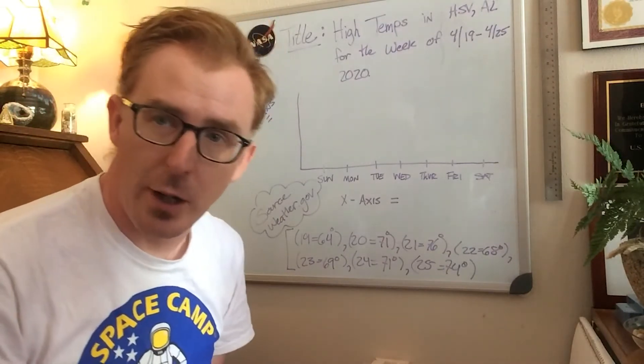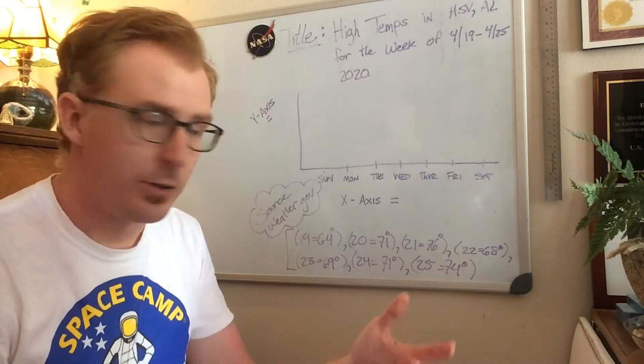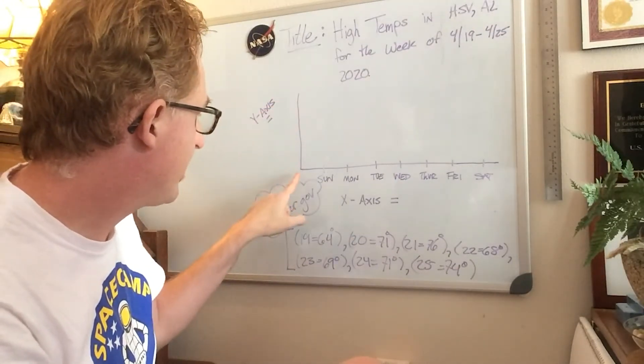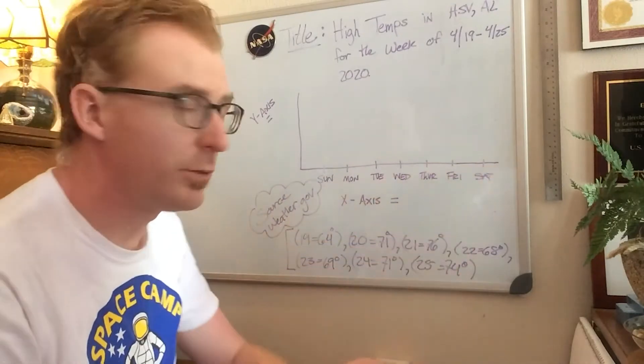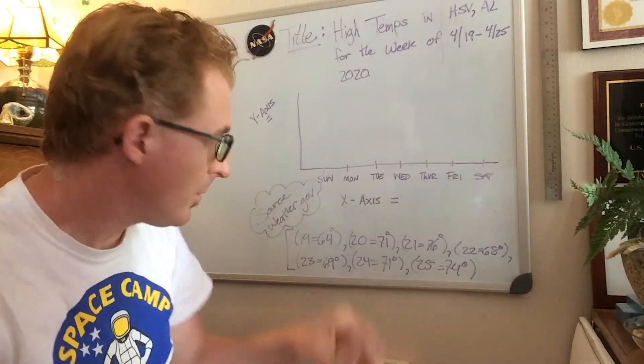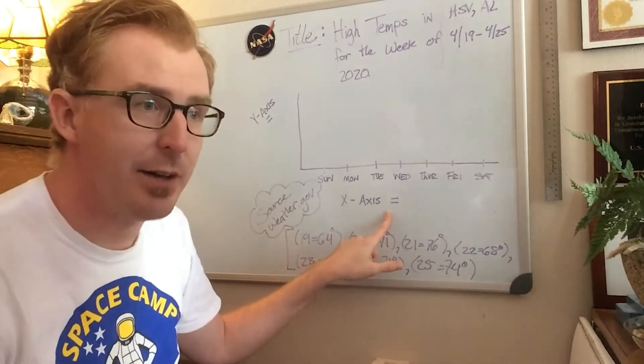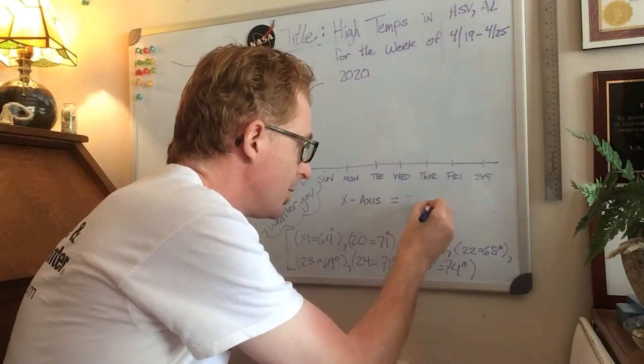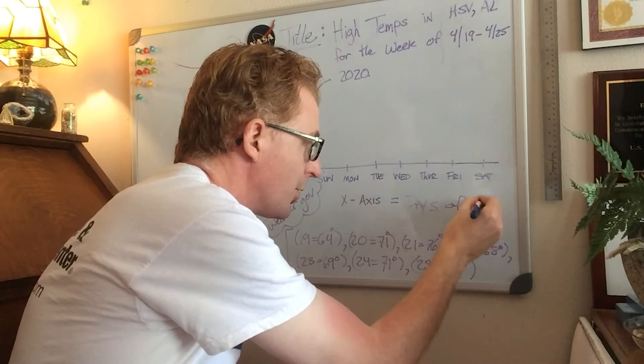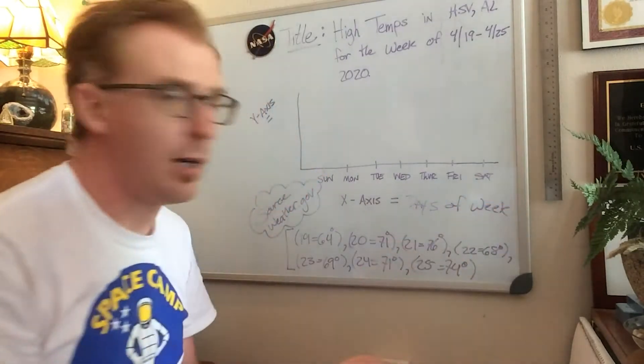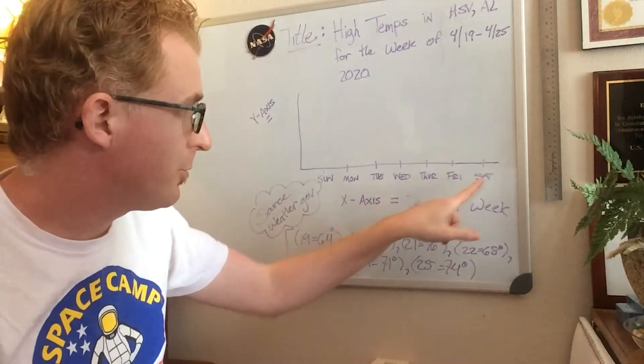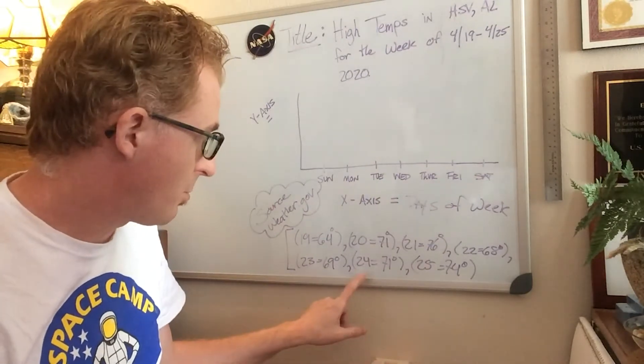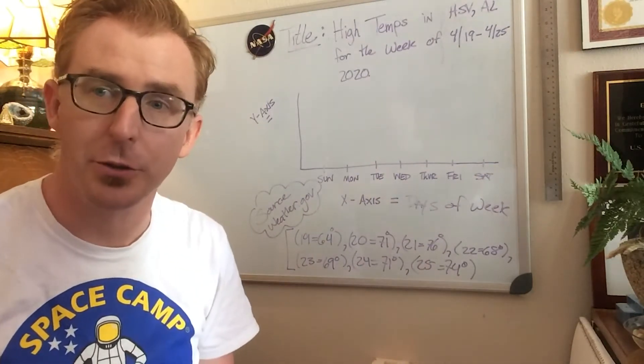So to make our graph, we need to first write our x and y. So I have my y-vertical axis and then my horizontal x-axis. On the x-axis, I'm going to have it labeled as days of the week. Now I went ahead and put Sunday through Saturday. But to make it more scientific to match my source data, I'm also going to write the date.